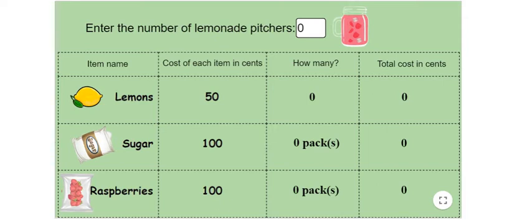Let us find out using this table. The first column of this table contains the items. The second column contains the cost of each item in cents — for example, the cost of one lemon is 50 cents. The third column gives us how many of those items we need, and the fourth column gives us the total cost of these items in cents.